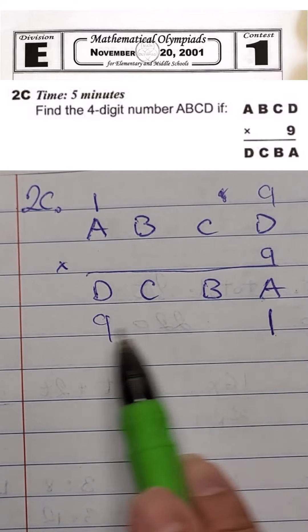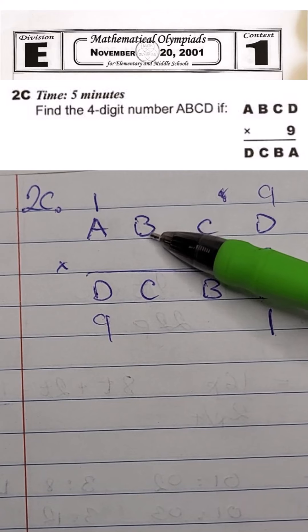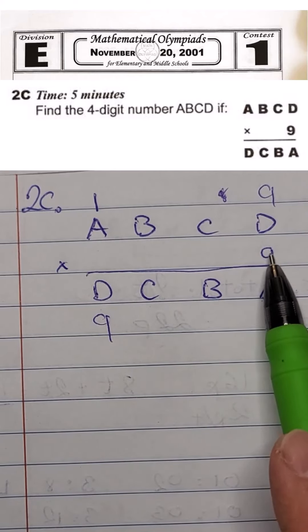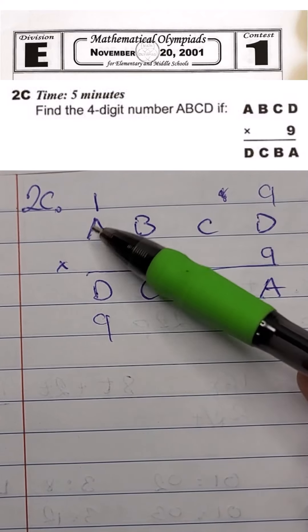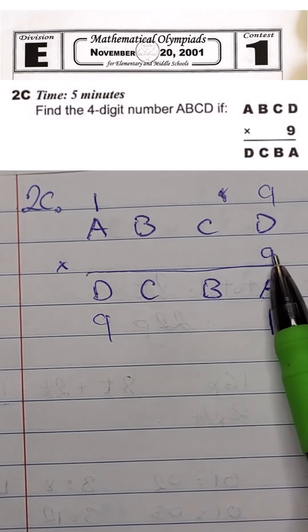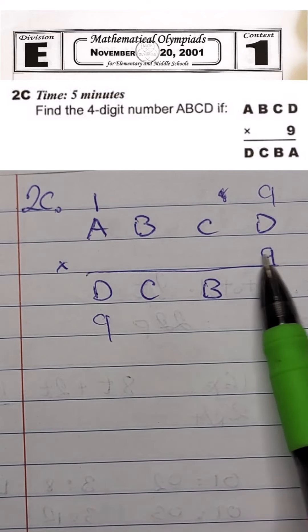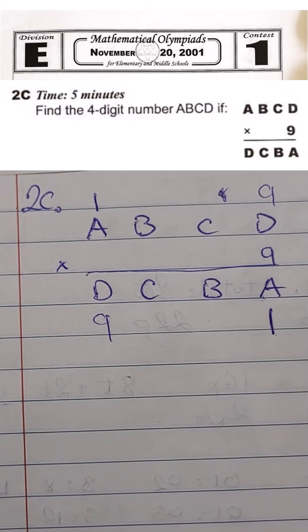We have 2 numbers here. If D is 9, A is 1, B cannot be any other number except for 0. Because if B is greater than 0, 9 times 2, whatever the number, B cannot be 1 because A is 1. However, if B is anything greater than 1, we would have to carry forward some numbers, which would make the result 5-digit long. Therefore, the best assumption and the only assumption,